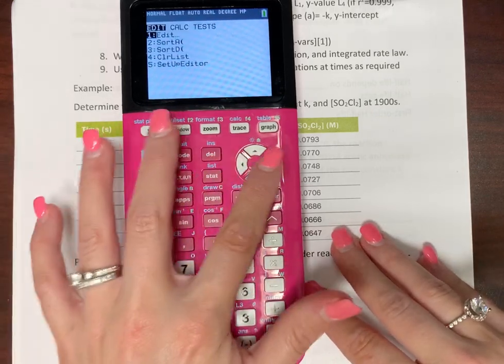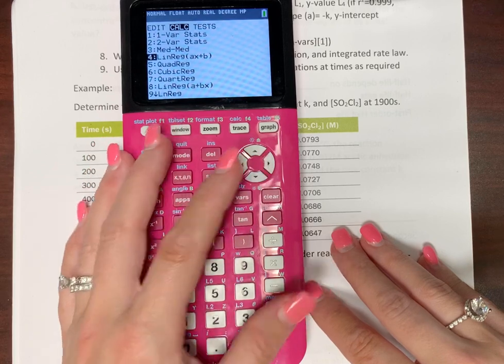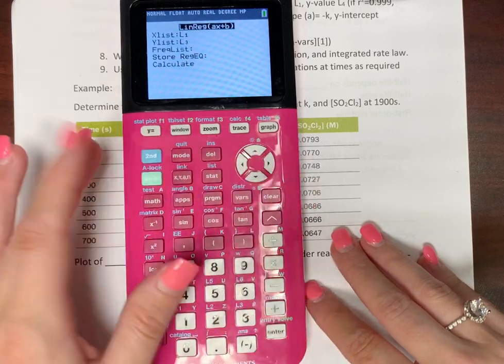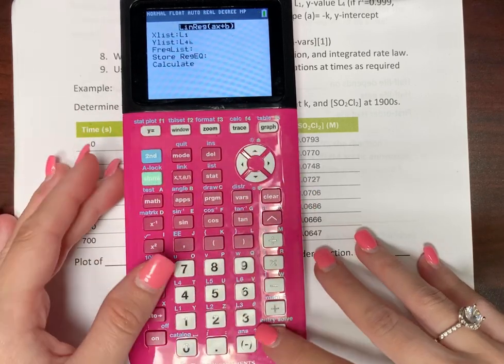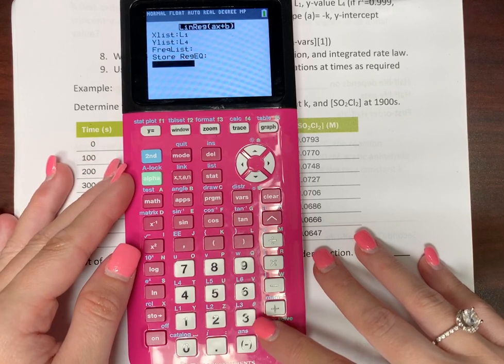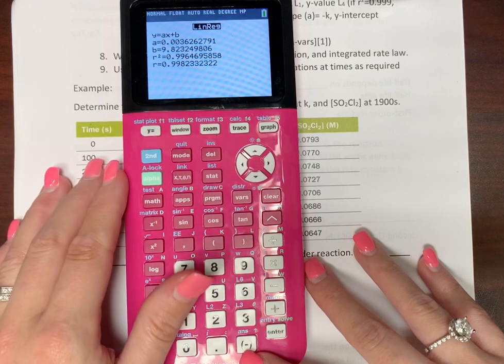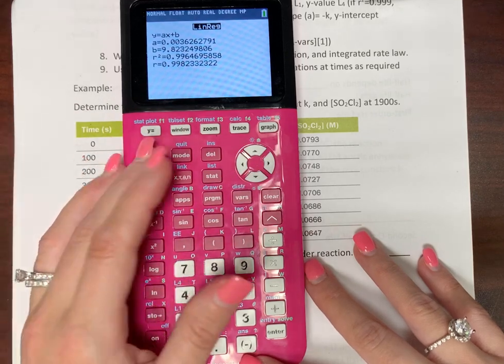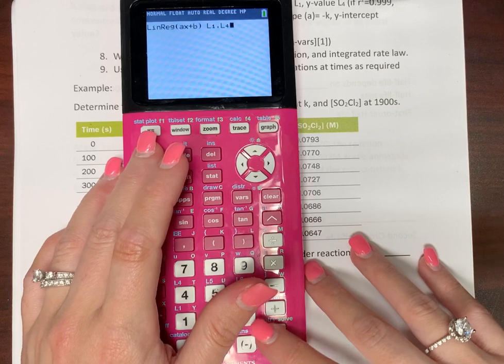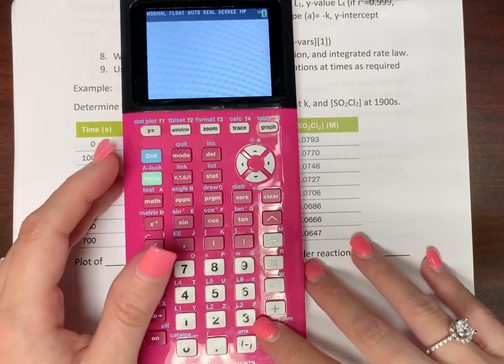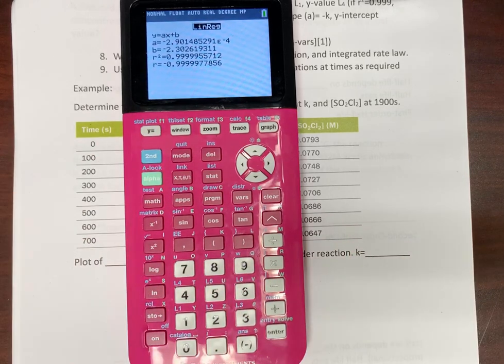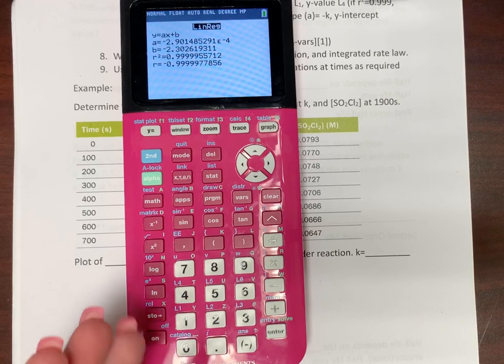Just to be sure, because it doesn't take long for the calculator to do a regression. So you do it one more time with your last list for your inverse to see if it's a second order. Nope, 0.996. So first order it is. So what I'm going to do is I'm going to clear out and go back. There we go. So there's my second order. So now I can use this information.